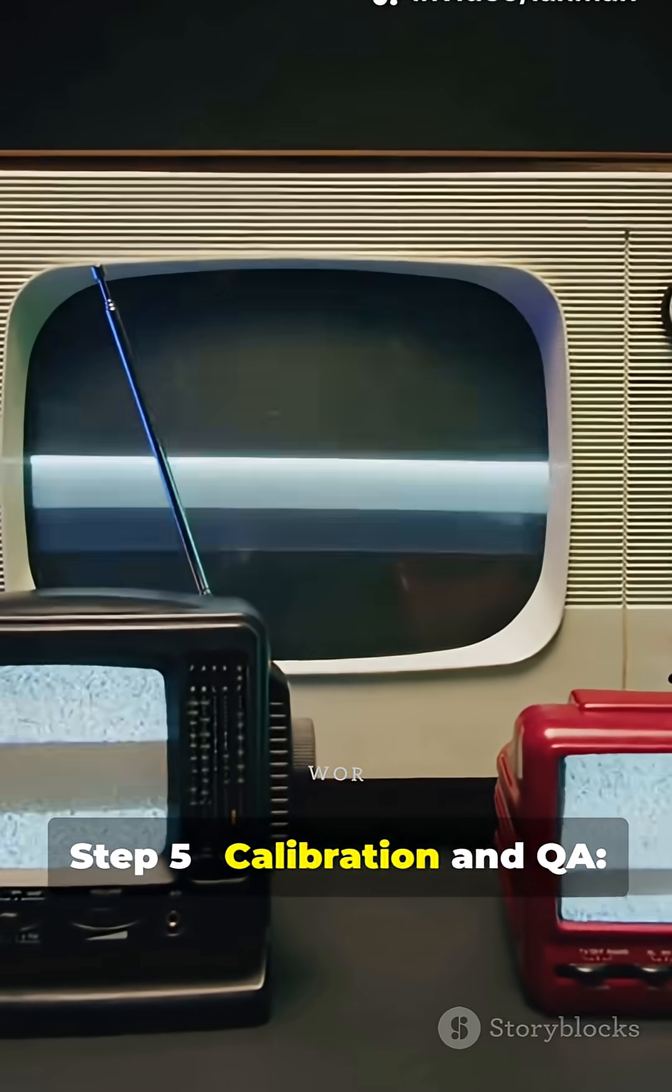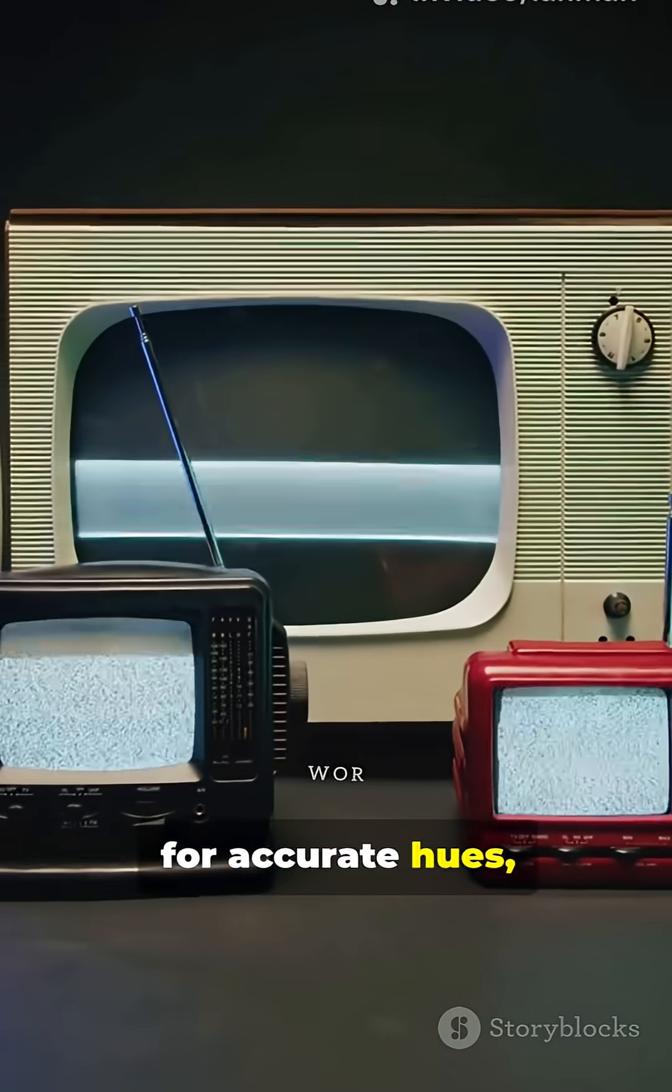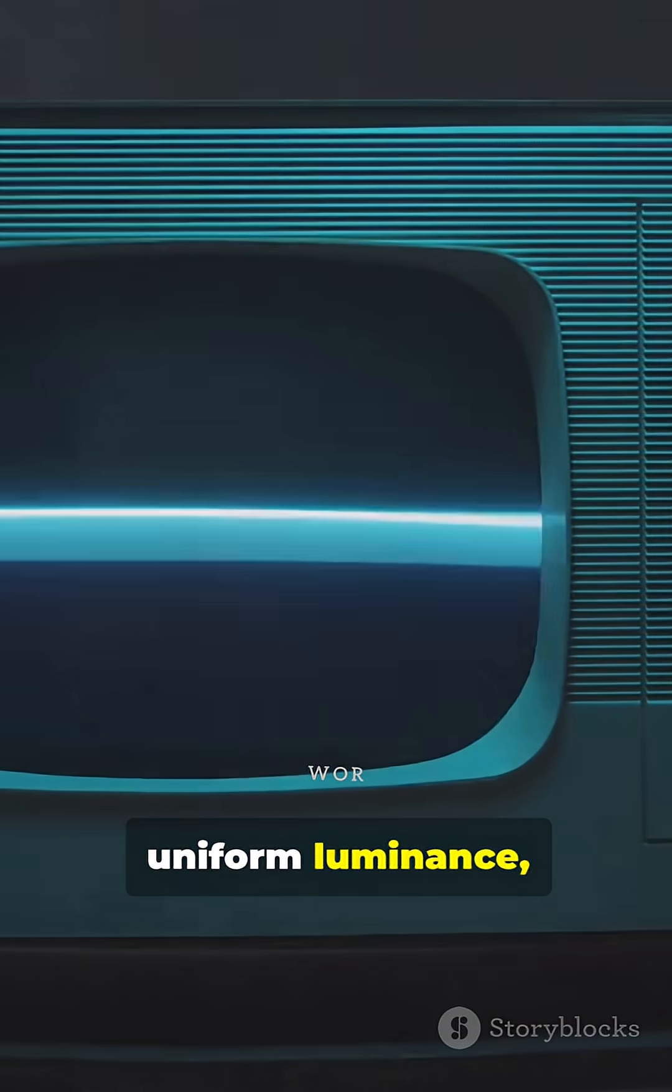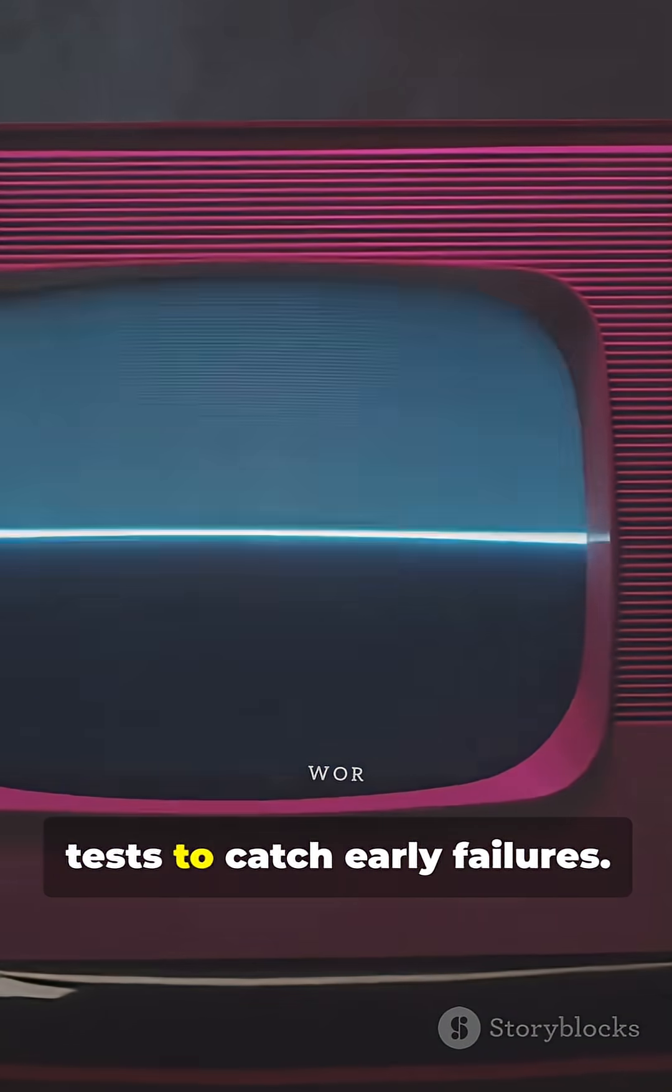Step 5. Calibration and QA. Every TV is color calibrated for accurate hues, brightness is checked for uniform luminance, and panels undergo burn-in tests to catch early failures.